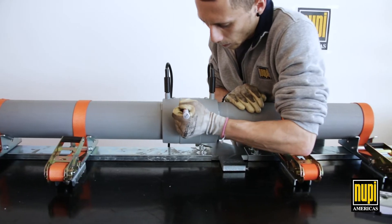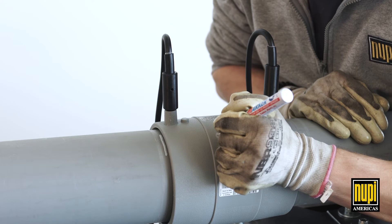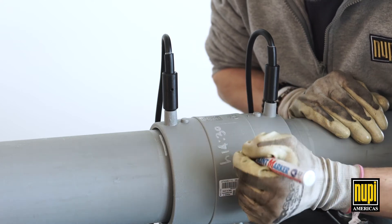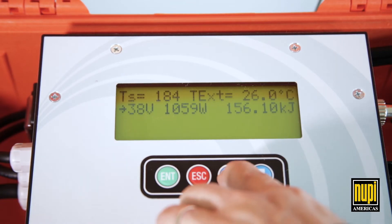Prior to disconnecting the cables, note the weld number and mark the coupling or fitting with the weld number and the last three digits of the machine's serial number.